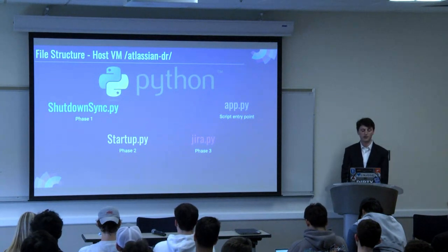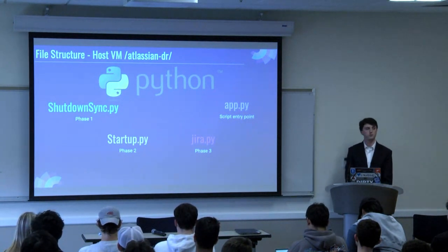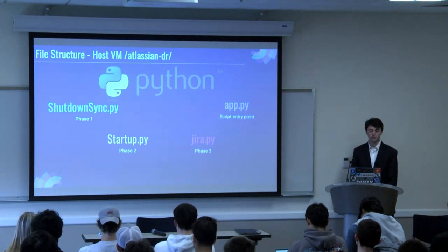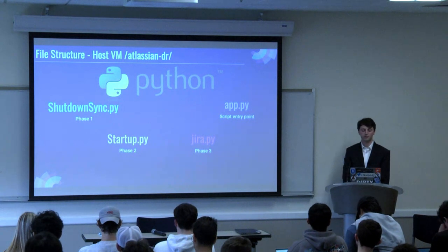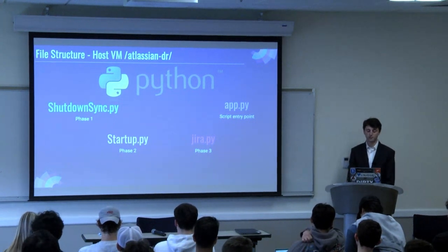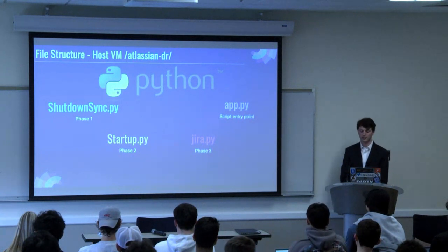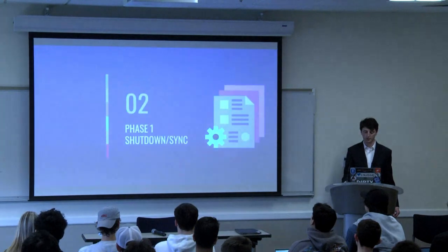The three Python files are: shutdown_sync.py, which shuts down the JIRA instance on the first host; startup.py, which starts up the JIRA instance on the second VM or server; and jira.py, which runs some online re-indexing tasks at the end of the process.